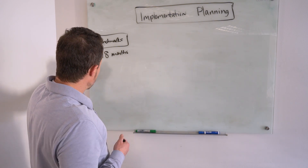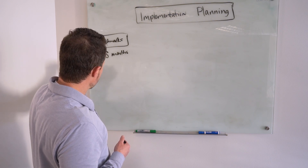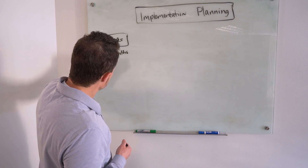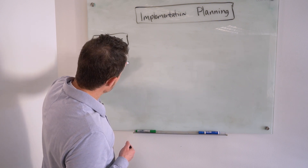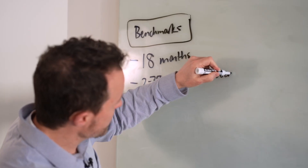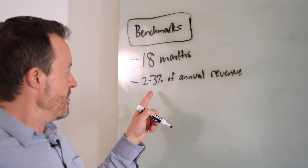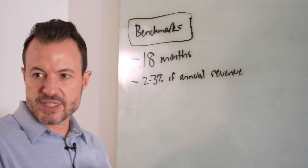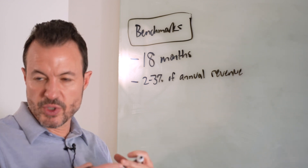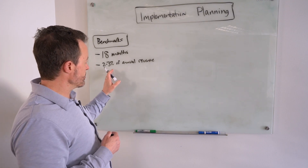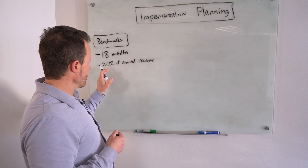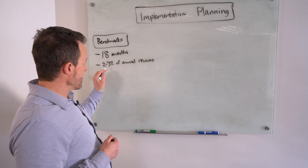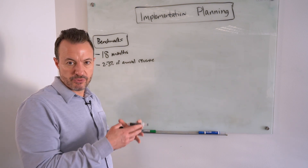There are two ways to look at average implementation cost. First, two to three percent of company revenue — or annual turnover — is typically spent on a transformation. Sometimes this can be as high as three to four percent for smaller organizations due to less economies of scale, but the average is somewhere between two and three percent of annual revenue. For example, a hundred-million-dollar company is likely to spend two to three million dollars total on its transformation.